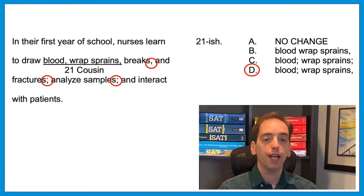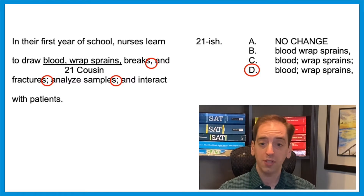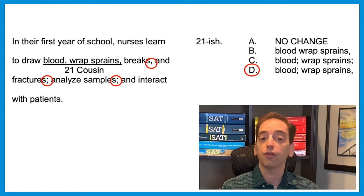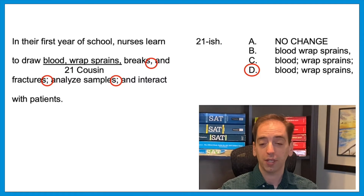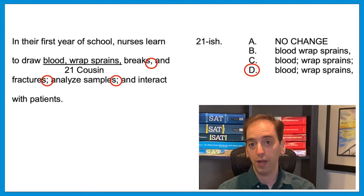The answer is D — that separates each item of the larger series with a semicolon: 'draw blood; wrap sprains, breaks, and fractures; analyze samples; and interact with patients.' We're allowed to do that because there's already punctuation between the items the nurses learn to wrap. So you can use a semicolon to separate items in a list when the items within that list already have their own punctuation. This is the rare variation; the other December questions deal with the normal use of a semicolon between two full thoughts.